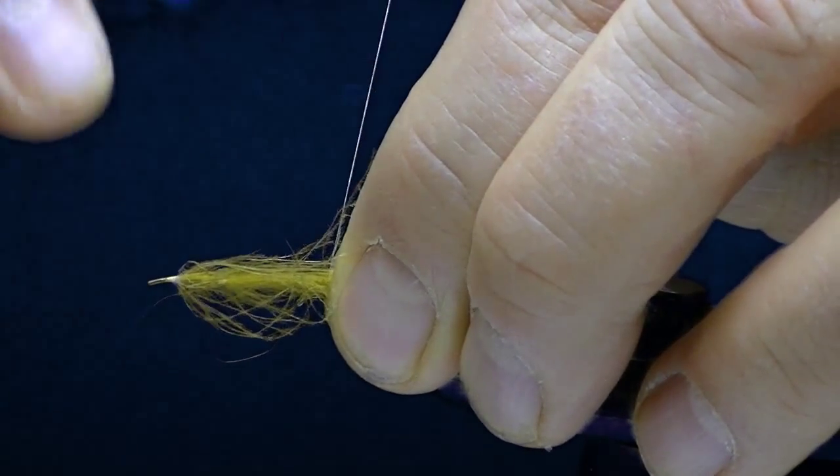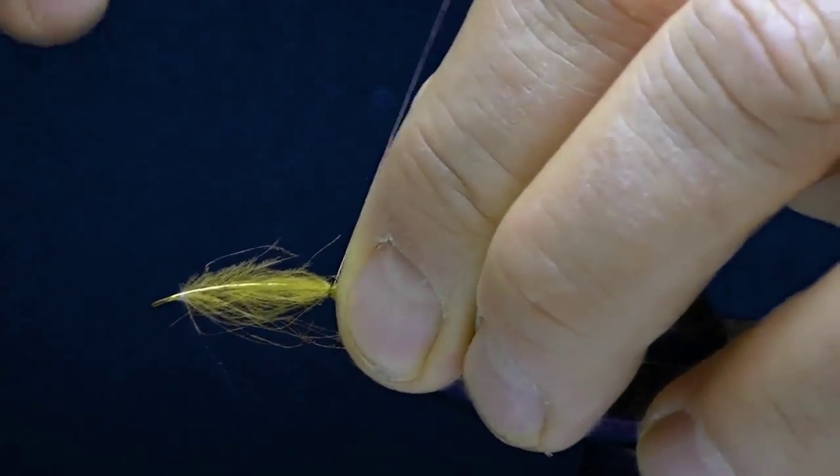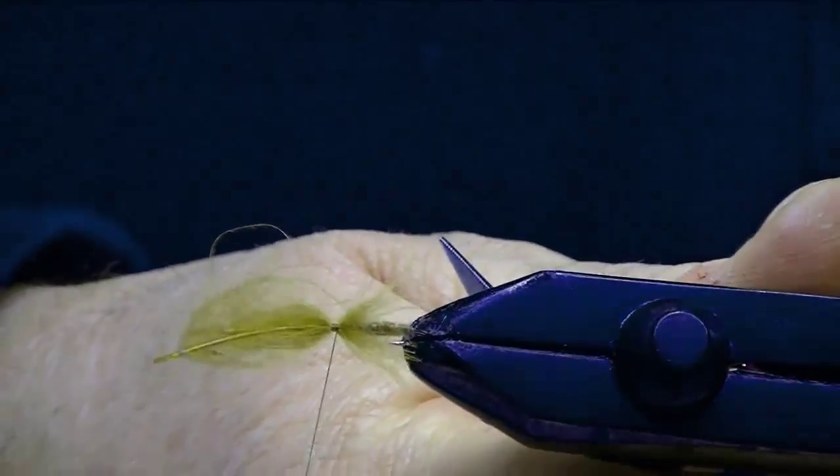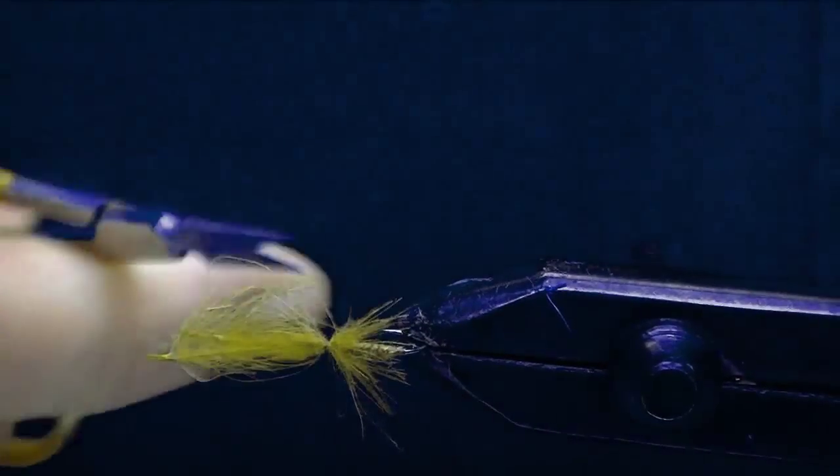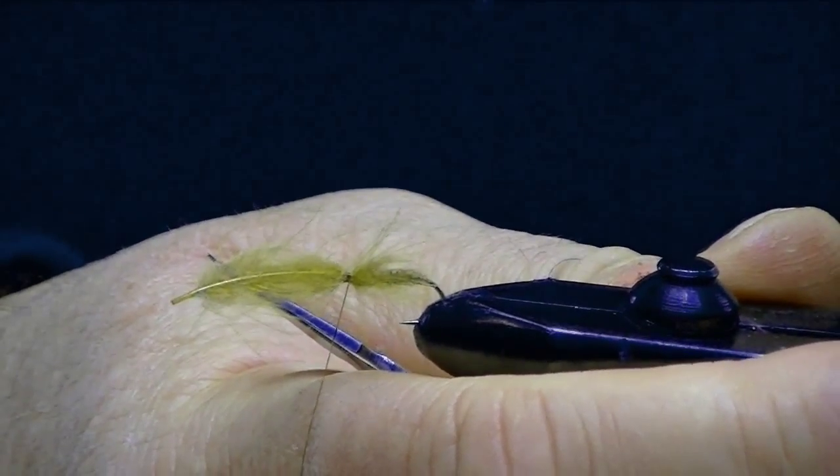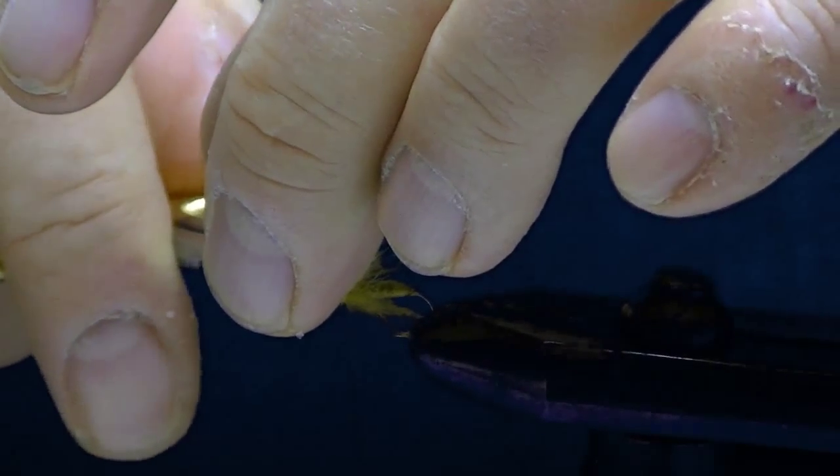I lay those down and I take one loose wrap and I cinch it up and I go around 3 or 4 times. And if you'll notice it gives us the legs sticking out on that caddis. You want quite a bit of CDC on this caddis. Next I'm going to go in and trim that.